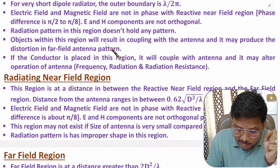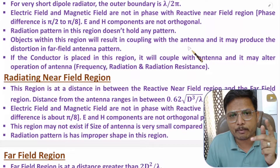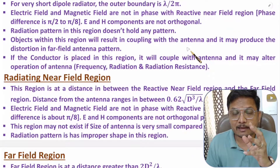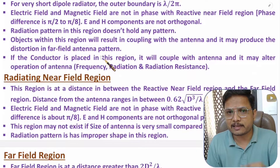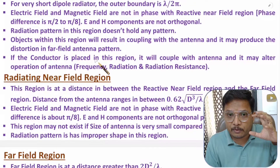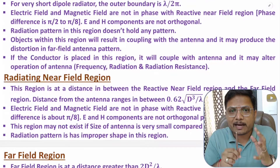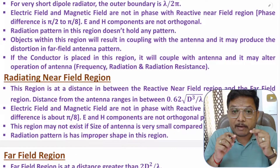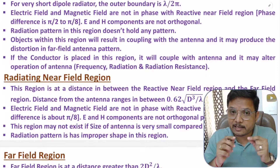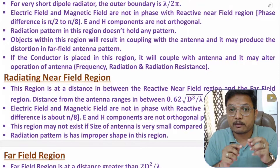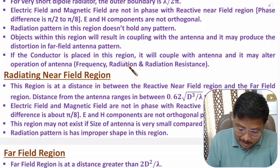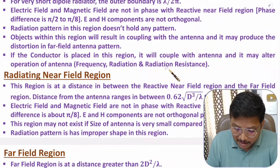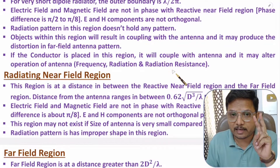Objects within the reactive near field region will result in coupling with the antenna, because more inductive components are present. If any object is present in that region, coupling will occur with the antenna, which may produce distortion in the far field antenna pattern. If any metallic body is in the reactive near field region, it may cause distortion in the radiation pattern because the inductive components produce coupling. Placing a conductor there can alter the antenna's frequency, radiation pattern, and radiation resistance.